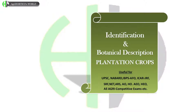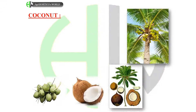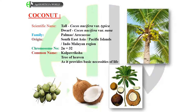Coconut: scientific name — tall tree: Cocos nucifera variety typica; dwarf tree: Cocos nucifera variety nana. Family: Arecaceae. Origin: Southeast Asia. Chromosome number: 2n = 32. Common names: Kalpa Vriksha and Tree of Heaven, as it provides basic necessities of life.